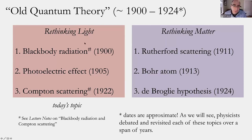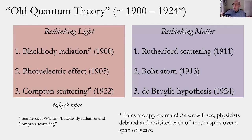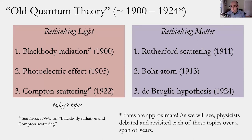I find it helpful to divide that first period of roughly 25 years into two sets of developments: physicists rethinking the nature of light, which we'll talk about today, and rethinking the nature of matter, which we'll cover next class. They didn't always make that division so clearly at the time, but with hindsight, once the newer work — what we now call quantum mechanics — began to coalesce, this division of strands within old quantum theory made more sense.